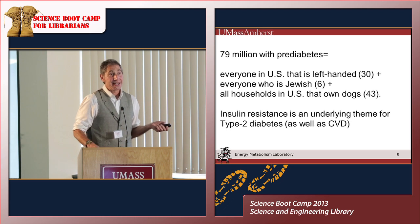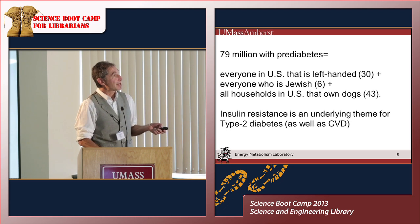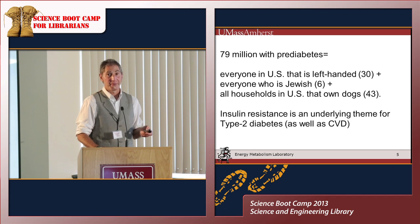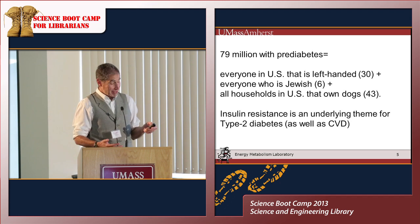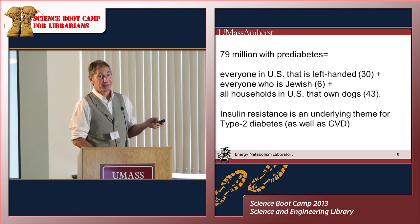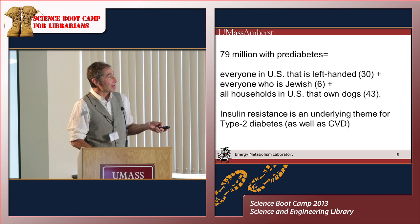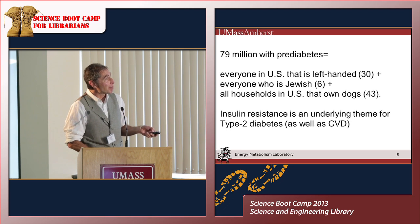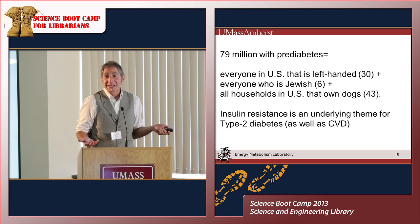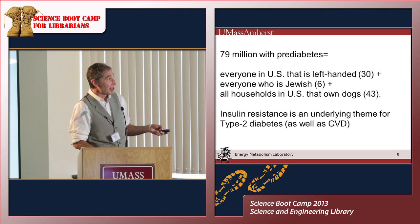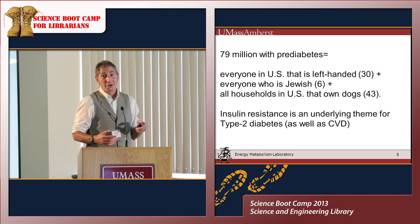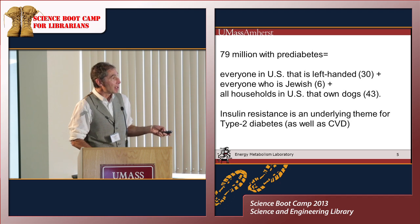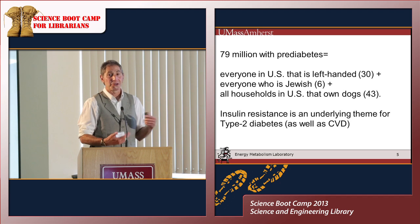These 19 million people with diabetes are dwarfed by the 79 million people with prediabetes — people who, as we say somewhat jokingly, are one Big Mac away from diabetes. That number could be expressed as everyone in the United States who is left-handed, or all the people who are Jewish — 6 million — or the 43 million households that own dogs. That's the number of people who have prediabetes.